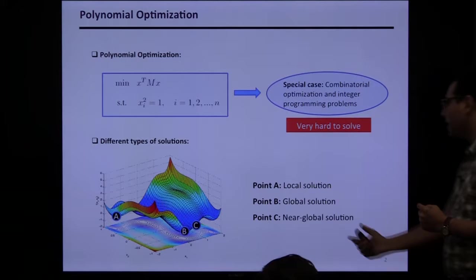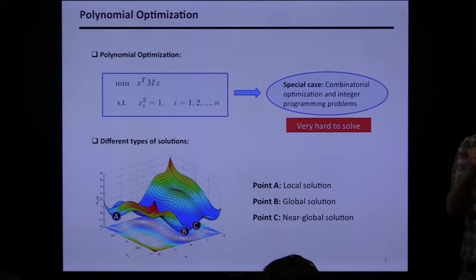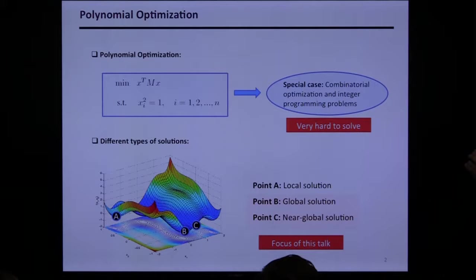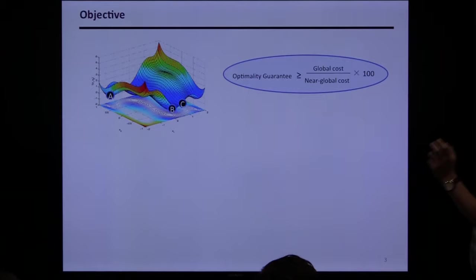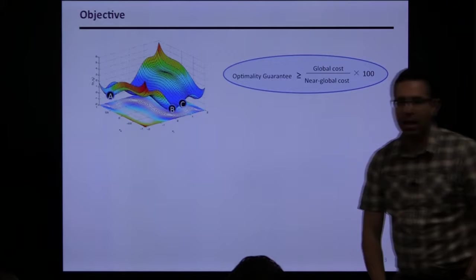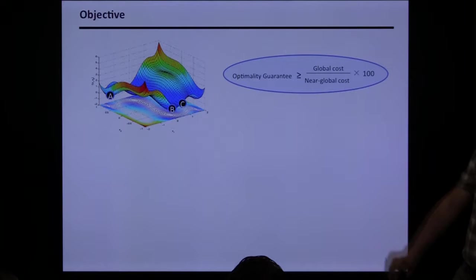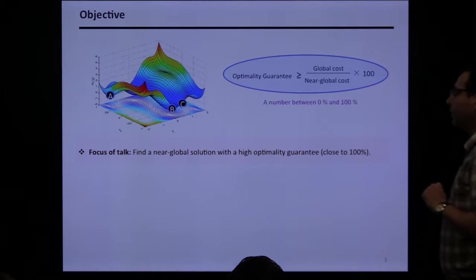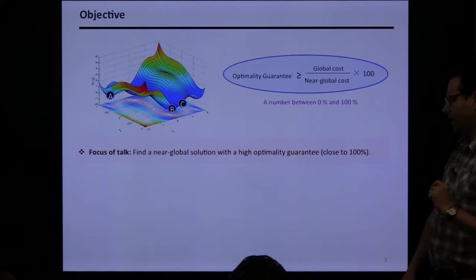The question is: what if we try to find a near-global solution — one that is not the best possible but is quantifiably close? This talk is about finding a global or near-global solution. Since a near-global solution isn't the best one possible, we need an optimality guarantee: a number between 0% and 100% that tells us how far we are from the optimal in the worst case. The focus is on finding a near-globally optimal minimum with a high optimality guarantee, hopefully close to 100%.